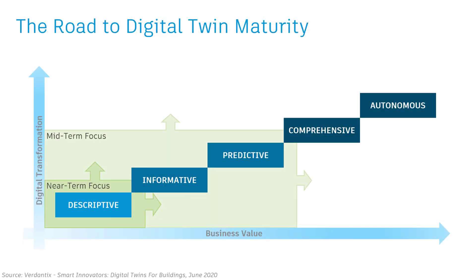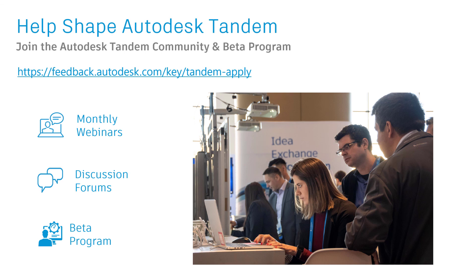Autodesk Tandem's roadmap has been intentionally structured to help our customers move up this digital twin maturity model — starting with our near-term focus delivering workflows to help curate a digital twin, and then beginning to move up the maturity scale through integrations with IoT and operational systems. We believe this roadmap will result in a solution that enables you to create a highly repeatable process for curating digital twins and beginning to take advantage of their operational benefits. We welcome you to join the Autodesk Tandem community — a place for monthly webinars, rich discussions about your requirements and priorities, and where you can also join the Autodesk Tandem beta program.